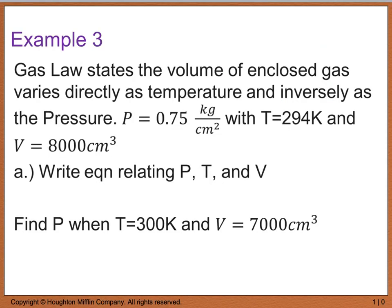Now for example 3, we're looking at the gas law. And it says the gas law states the volume of an enclosed gas varies directly as temperature and inversely as the pressure. And it gives us a value for pressure, temperature, and volume. So it says write an equation relating P, T, and V. It tells us that the volume varies directly. So if it varies directly, we know that V equals k as the temperature, which is T, and inversely as the pressure, so divided by P. So this would be our equation relating the P, T, and V.